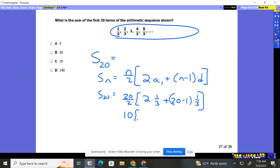So we have 10. Two times one-third is two-thirds plus 19 times one-third, which is 19 thirds.